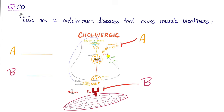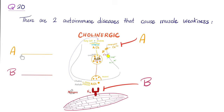Quiz time — question number 20. There are two autoimmune diseases where autoantibodies attack your own body and cause muscle weakness. The first disease attacks the calcium channels on the pre-synaptic neuron. The second disease attacks the nicotinic sub-M receptor on the post-synaptic surface. What's the name of disease A? What's the name of disease B? Let me know in the comments — you'll find the correct answers in the next video.